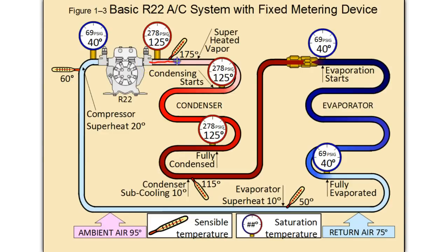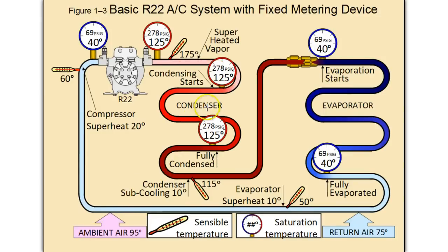As the high pressure, high temperature superheated vapor enters the condenser, it will start to condense. The part between the point it enters and the point it condenses, it desuperheats — shedding sensible heat. It's getting rid of that 50-degree difference between the 175 it actually is and what it should be at its saturation point. At a certain point in the condenser, it reaches its saturation point, and as heat is removed it changes state from vapor to liquid. At that point it is still at 278 psig but now at its saturation temperature of 125 degrees Fahrenheit.